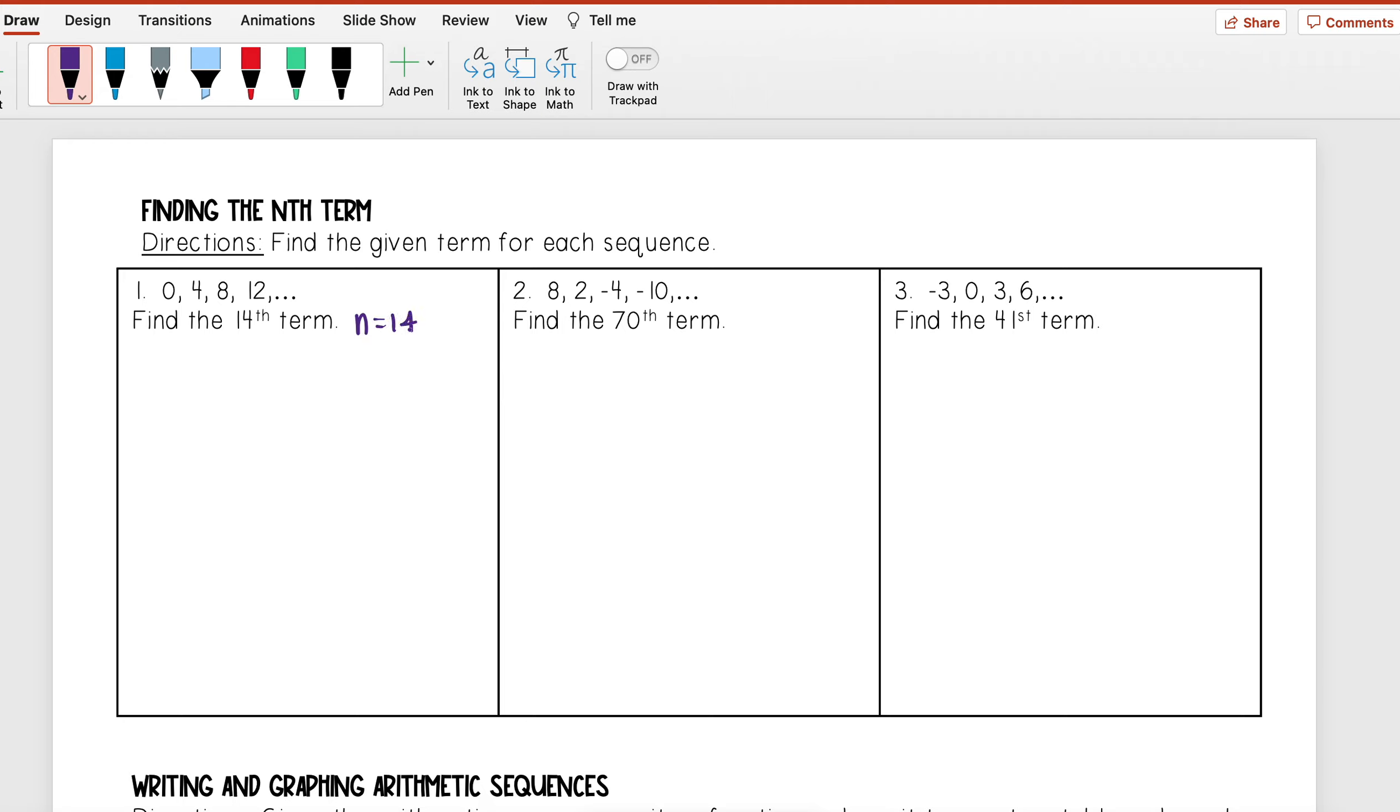So I want to first find my explicit formula. I know that a_n is equal to a_1 plus (n - 1) times d. Okay, well a_1 stands for my first term and here my first term is 0.